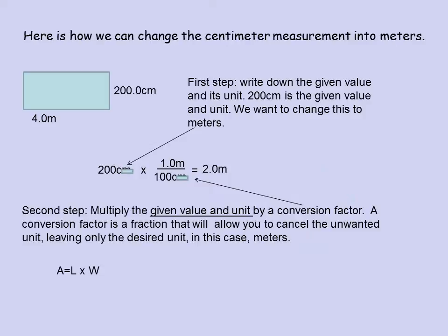So now we solve the problem. Area equals length times width. Area equals 4 meters times — not 200 centimeters, but 2 meters. That gives us an area of 8 square meters. Notice we squared the meters: we multiplied meters times meters, not meters times centimeters. That's why you have to use dimensional analysis to make this change.